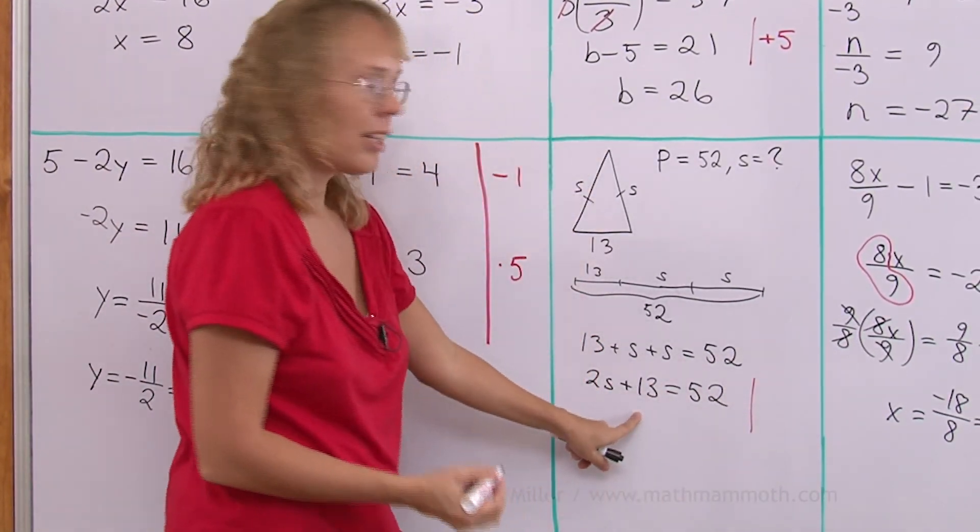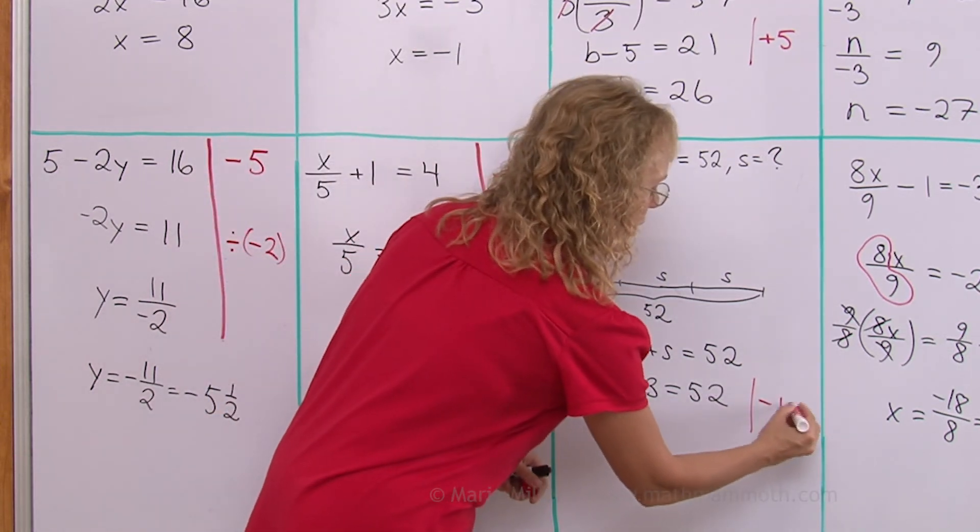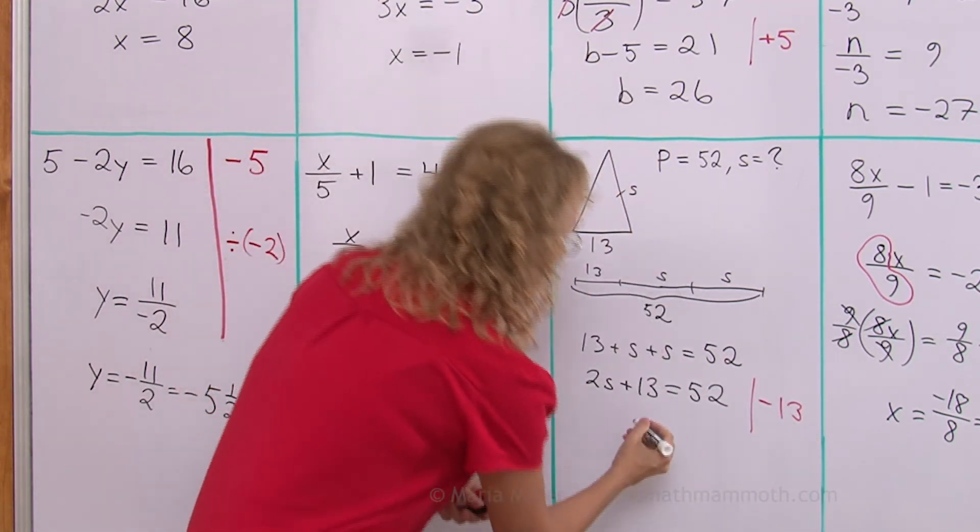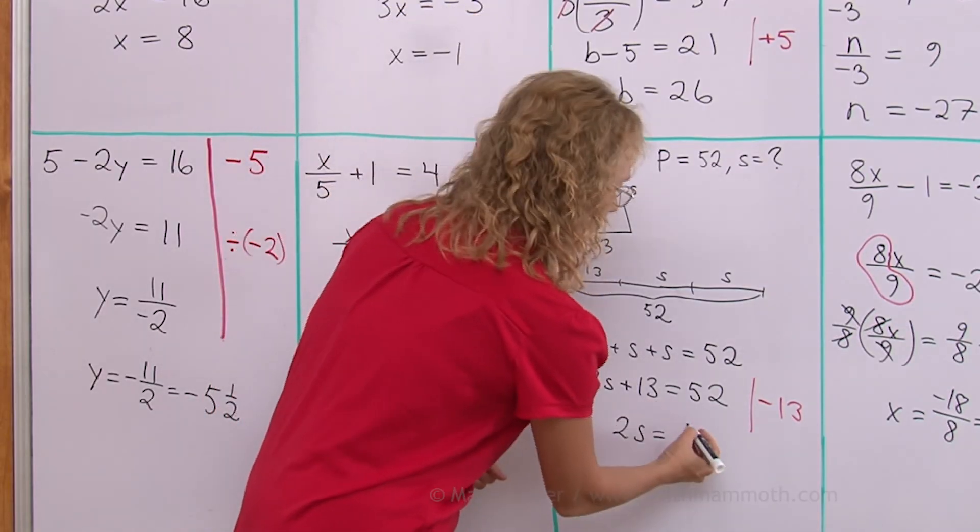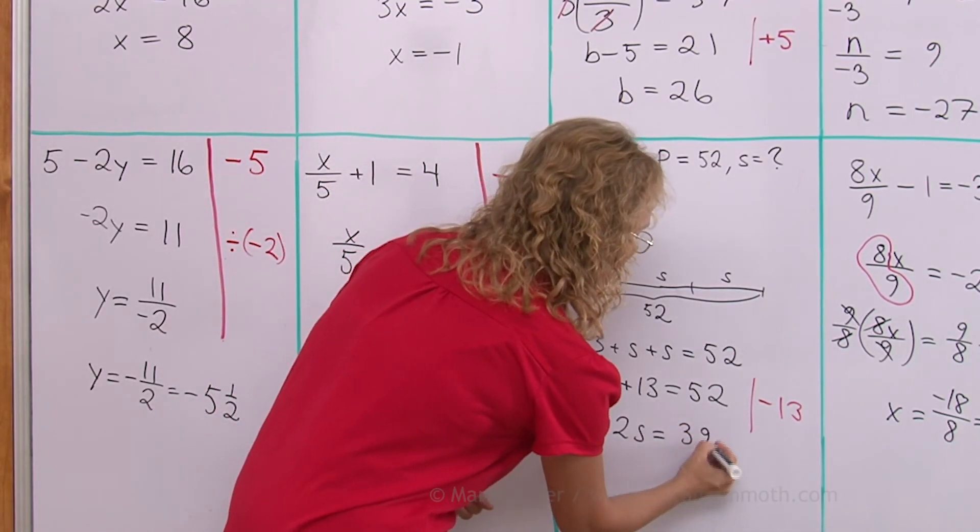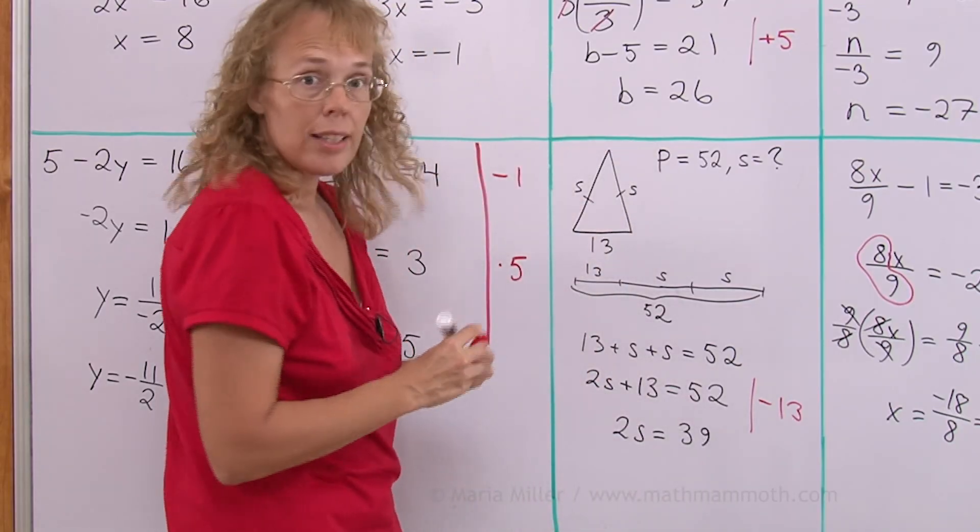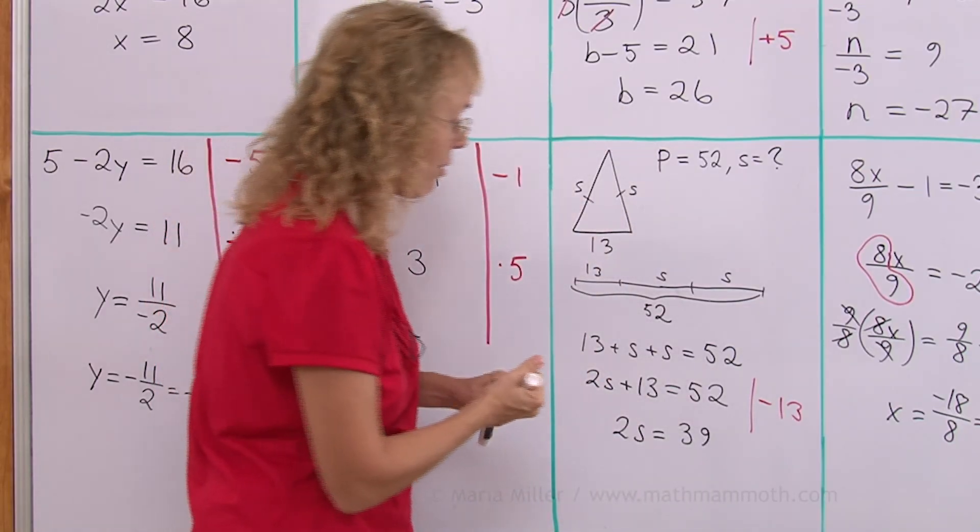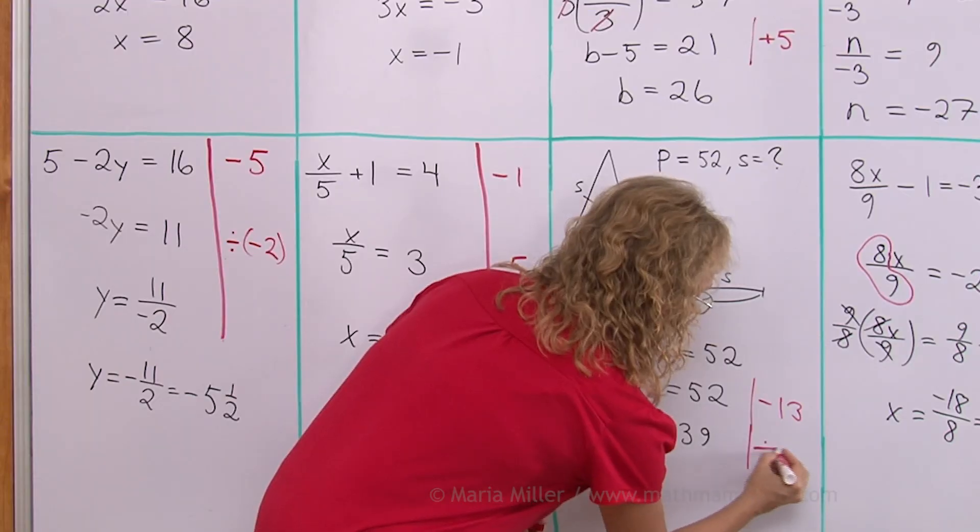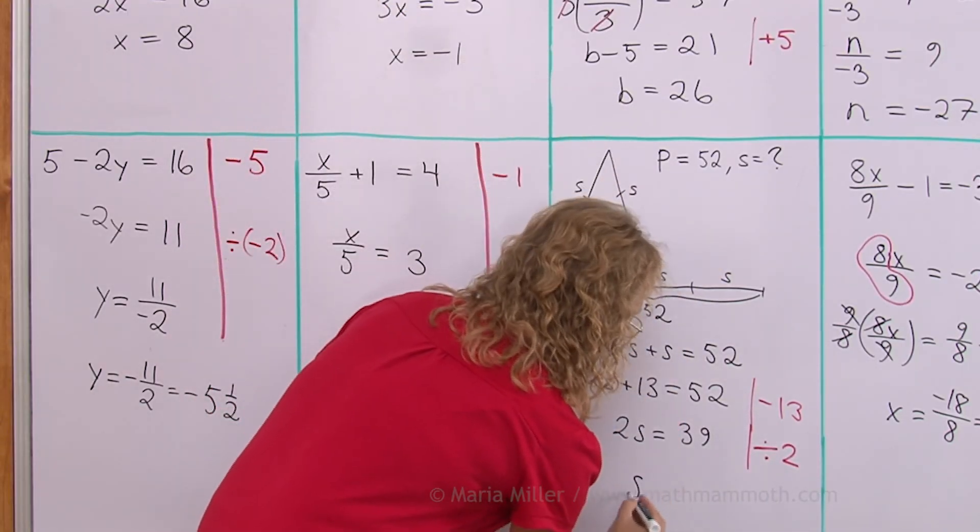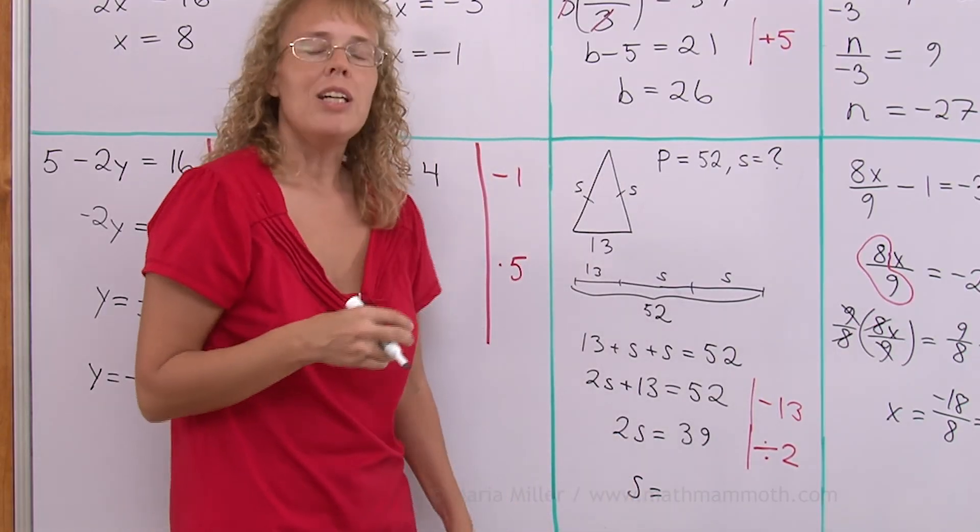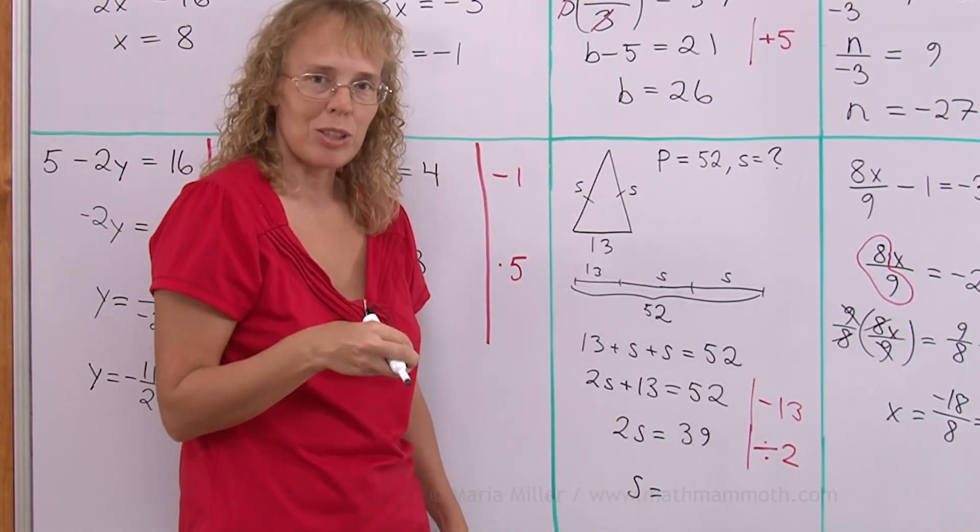To solve it, first I'll get rid of this 13 by subtracting it from both sides. That leaves 2s over here. And over here we get 39. And then 2 times S equals something, so I need to divide by 2. Divide both sides by 2. And so S is alone now. And 39 divided by 2. It's almost 40 divided by 2.